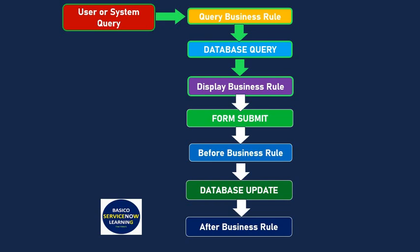Then the display business rule gets executed, since display business rule executes just after the data is read from the database. Once the display business rule executes and the user fills in the required information and submits the form, the before business rule gets executed. Just after the before business rule, the database operation or database update is performed, and immediately after the database update, the after business rule gets executed.